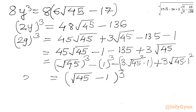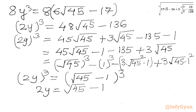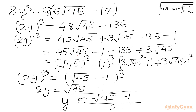Taking the cube root of both sides, we get 2y equals √45 minus 1. Therefore y equals (√45 minus 1) over 2. This is our final answer. I hope friends you will like this video. Thank you so much for watching. Do not forget to like, share, and subscribe. Bye bye till next video. Good luck.